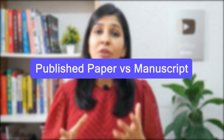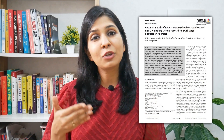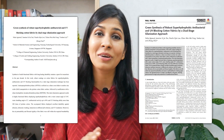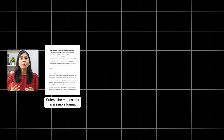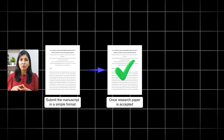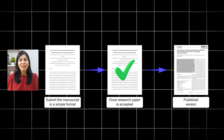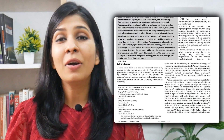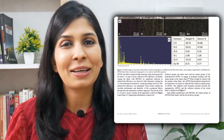The first thing you should know is the difference between a published paper and the manuscript. The final research paper that you see online and the manuscript that we submit to the journal are not the same. We usually submit the manuscript in a simple format, and once our research paper gets accepted, the editorial team of the journal polishes it to the clean professional version that eventually gets published. Our responsibility is to submit our research paper in a simple, well-structured manuscript based on basic journal formatting guidelines.